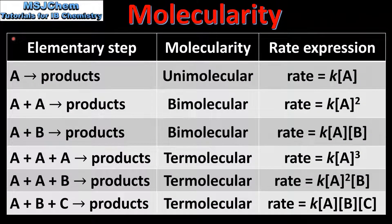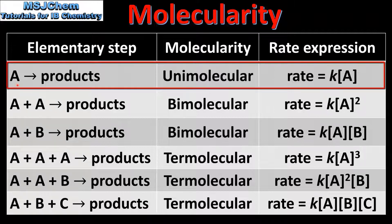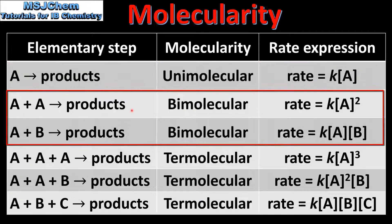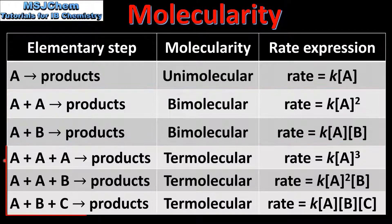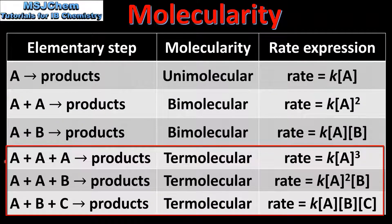Let's end the video with a summary. In this table we have the elementary step, its molecularity, and an example rate expression. The first example is a unimolecular elementary step where one particle reacts to form products, and in the right column we can see an example rate expression. In the next two rows we have bimolecular elementary steps, again with example rate expressions. The last three rows show termolecular elementary steps. As mentioned earlier, termolecular elementary steps are rare, and in the right column we can see example rate expressions.